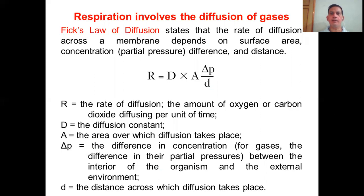Vice versa for carbon dioxide — concentration will be higher inside and lower outside to facilitate diffusion. The term D refers to the distance across which diffusion takes place. If the distance between the outside atmosphere and the internal exchange structures is greater, the rate of diffusion will be less. In organisms breathing through the skin, such as amphibians, the tissues taking up oxygen must be just beneath the skin. In echinoderms, the papulae are on the skin surface — structures designed to decrease the distance gases need to travel.